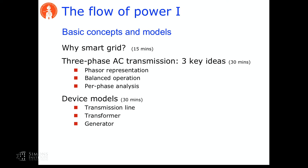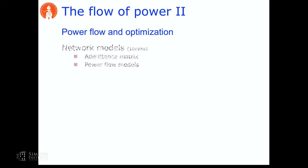I'll talk a little bit about transformers and not too much about generators. There's a load model, which is very complicated, but for us it's just one or two numbers that represents the load. With all these devices modeled, we can build a model for the network that mathematically we can simply represent by a matrix called the admittance matrix. A lot of power flow optimization is expressed in terms of this admittance matrix, and the different forms of power flow models all describe the same thing but have different mathematical properties.